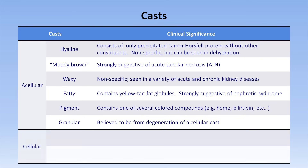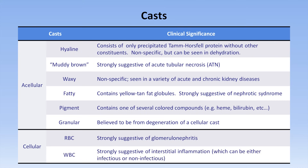Cellular casts have two main varieties. Red blood cell casts are strongly suggestive of glomerulonephritis. White blood cell casts are strongly suggestive of interstitial inflammation, which can be either infectious or non-infectious.